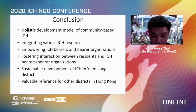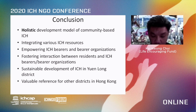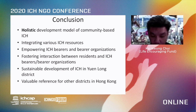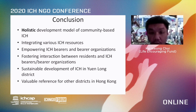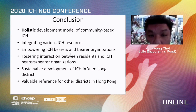With this complete package, the project integrates various ICH resources, empowers ICH bearers and bearer organizations, and fosters interaction between residents and ICH bearers for the sustainable development of ICH in Yuen Long district. Being empowered by the NGO, ICH bearers and bearer organizations would continue transmission on their own with more participation from residents in the same district. This holistic development model of community-based ICH would be a valuable reference for other districts in Hong Kong as well as other regions and countries. That concludes my presentation. Thank you for listening.